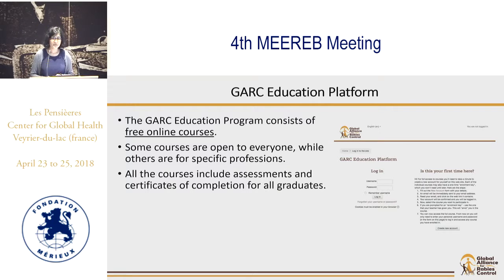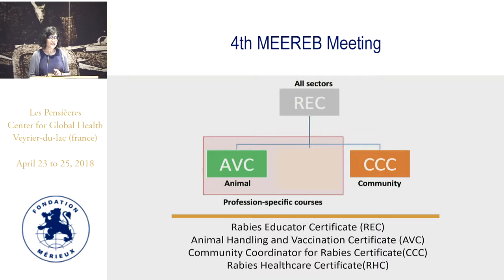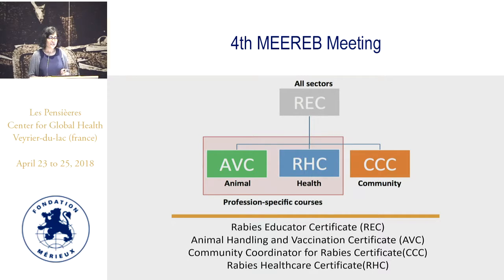The GARC education platform is a set of free online courses open to everyone — some of them — and some are for particular professions. Every course has an online assessment, and only by successfully completing this can a graduate get a certificate of achievement. Right now we have three courses: the Rabies Educator Certificate, available in English, French, and Spanish; the Animal Handling and Vaccination Certificate, available in English and French; and the Community Coordinator for Rabies Certificate, available in English. We're soon going to have the Rabies Healthcare Certificate.